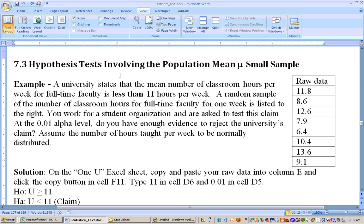Okay, this is section 7.3, and this is a hypothesis test for the population mean small sample. So there's not much new about this. We're just dealing with small sample sizes, which will involve the T-score, and Excel will calculate that for us. So let's go ahead and do this problem.